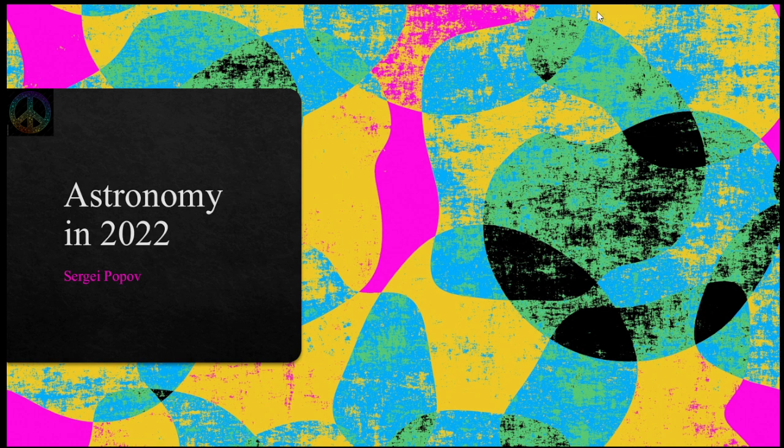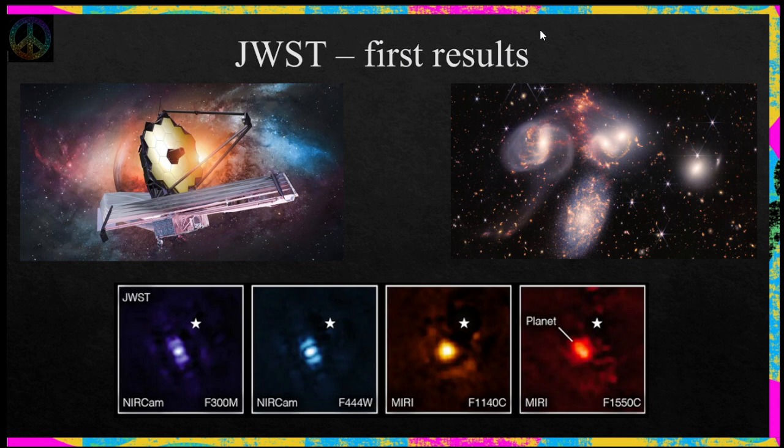Hi! In this short lecture I want to present my personal choice of some interesting astronomical results obtained in 2022. Definitely in history we'll remember this year in astronomy as the year when the James Webb Space Telescope started to produce its first results. I just want to start with mentioning that in 2022 the most interesting results were related to galaxies and to exoplanet studies.